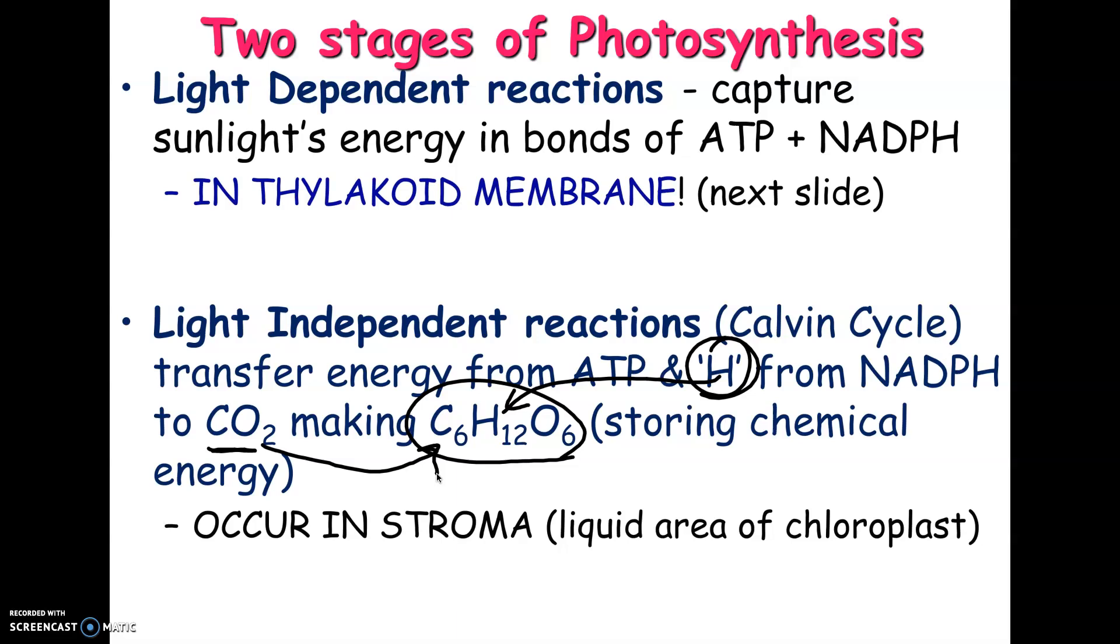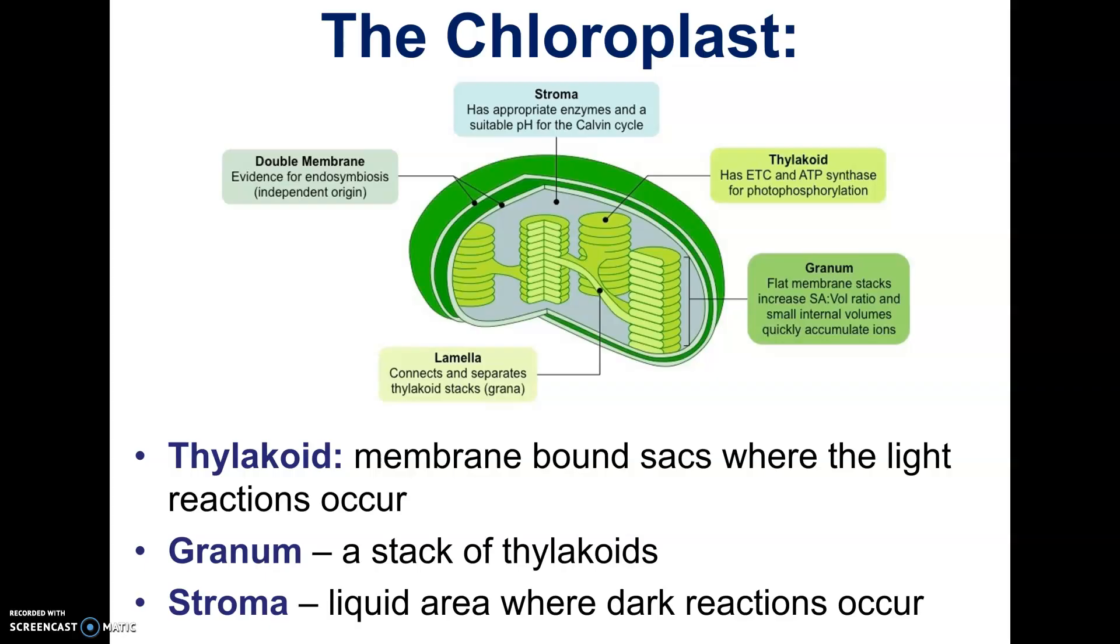And then what's going to run the building of sugar, because this is an endergonic process, is going to be the ATP. And the location of this process is the stroma, which is a liquidy part of the chloroplasts. So let me show you.